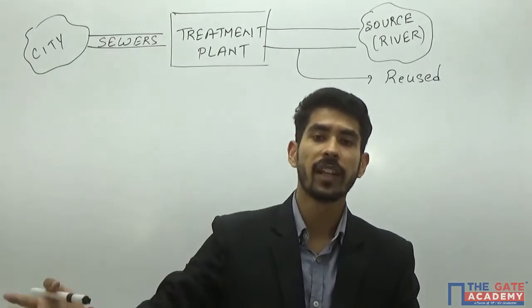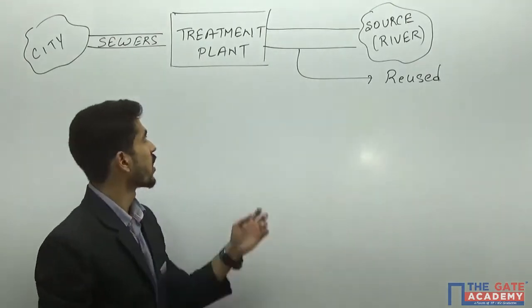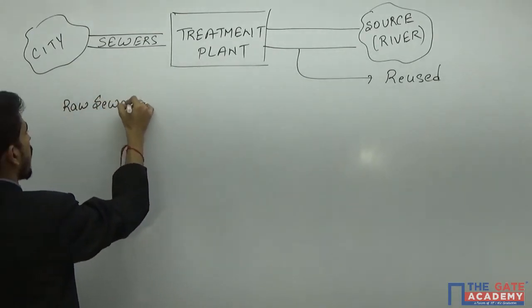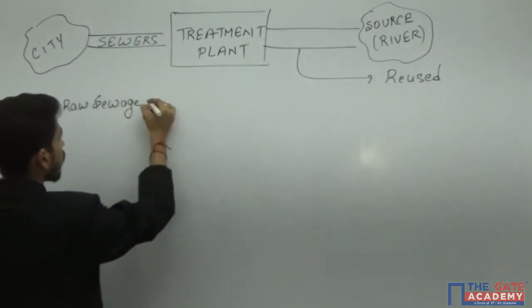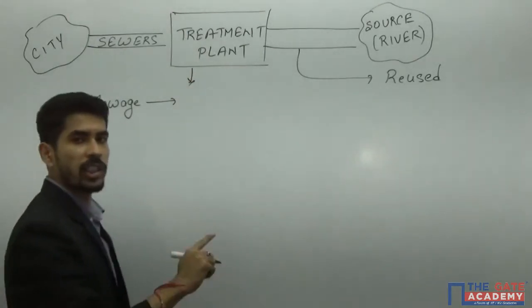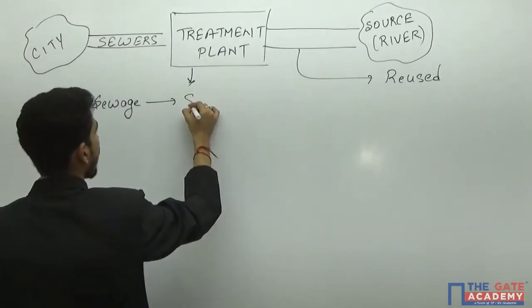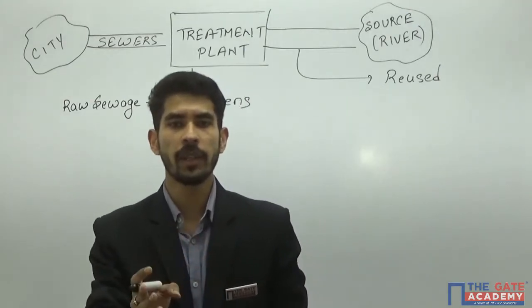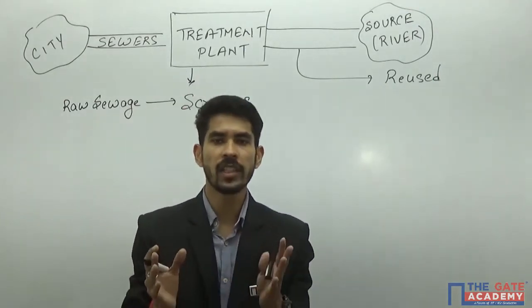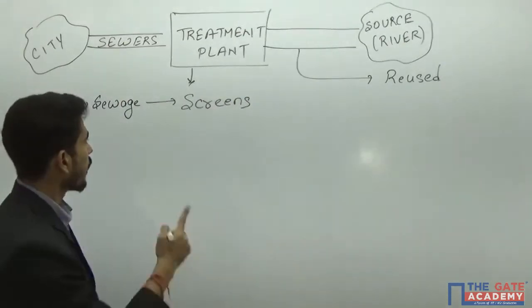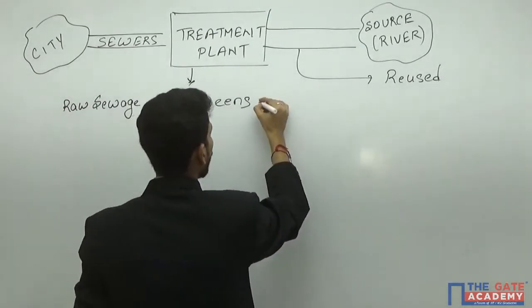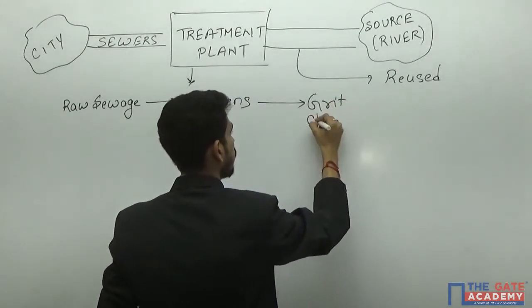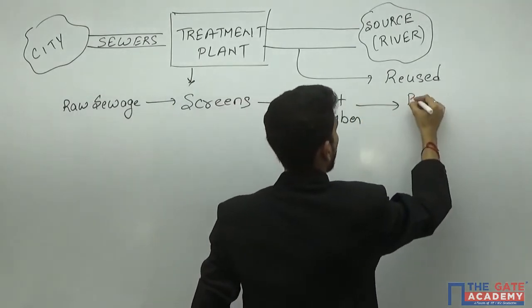Let us discuss the various treatment units present in the treatment plant. When raw sewage enters the treatment plant, the first unit is screens — just as in raw water engineering, screens are used to remove the heavier impurities. Then for finer impurities we have two processes: the grit chamber and the primary sedimentation tank.